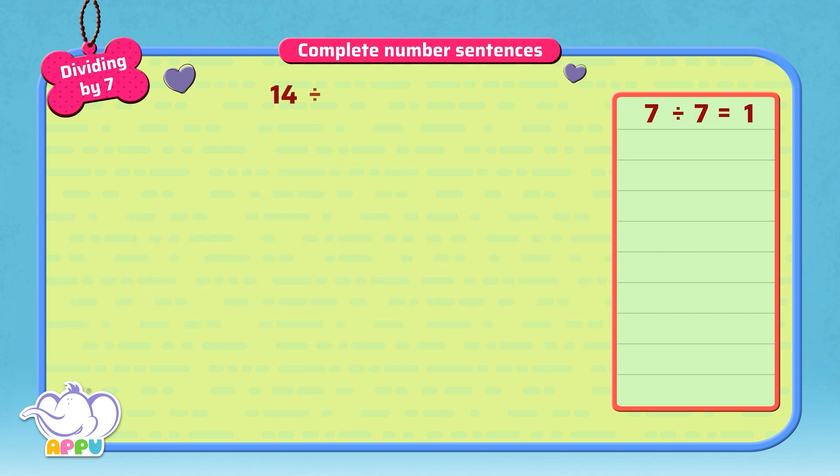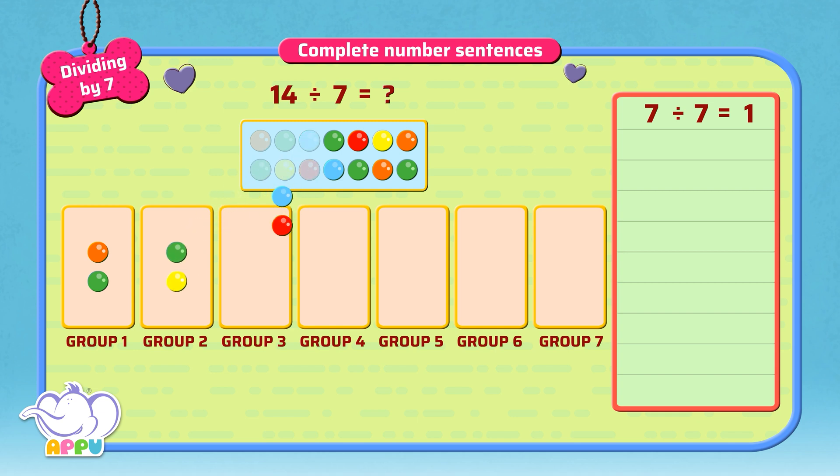What is 14 divided by 7? When we divide 14 beads equally into 7 groups, we get 2 beads in each group.